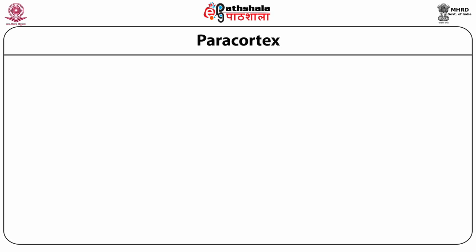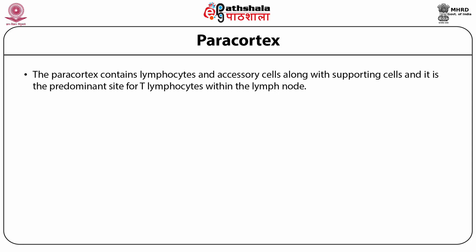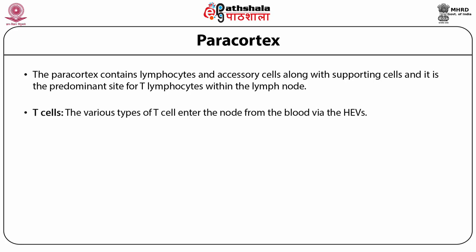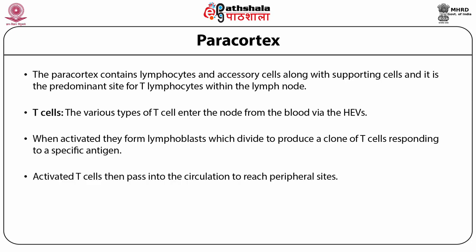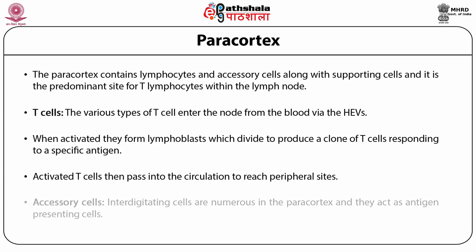The pericortex contains lymphocytes and accessory cells along with supporting cells, and it is the predominant site for T lymphocytes within the lymph node. T cells enter the nodes from the blood via HEVs. When activated, they form lymphoblasts which divide to produce a clone of T cells responding to a specific antigen. Activated T cells then pass into the circulation to reach peripheral sites. Accessory cells of the pericortex include interdigitating cells, which are numerous in the pericortex and act as antigen-presenting cells.